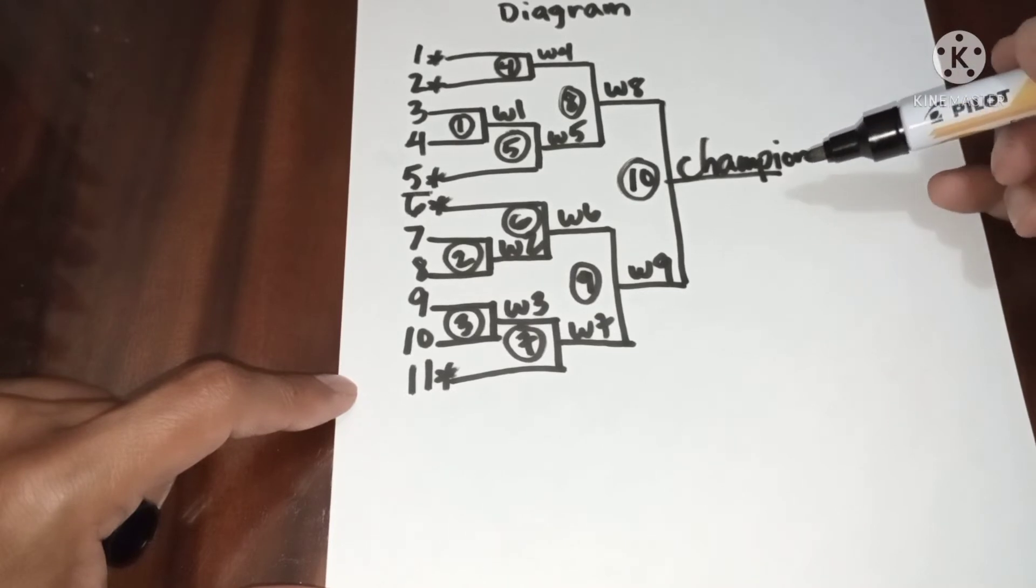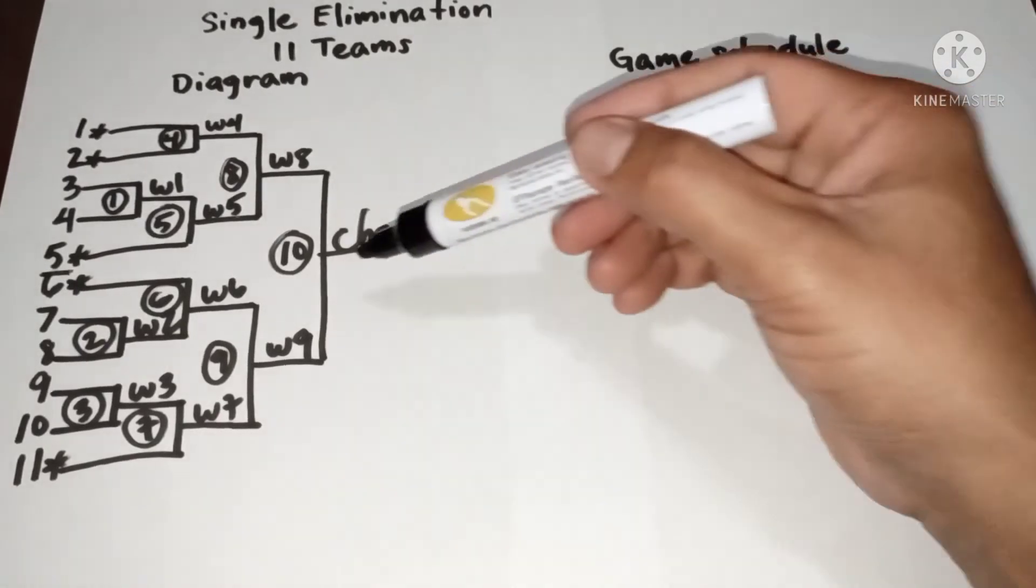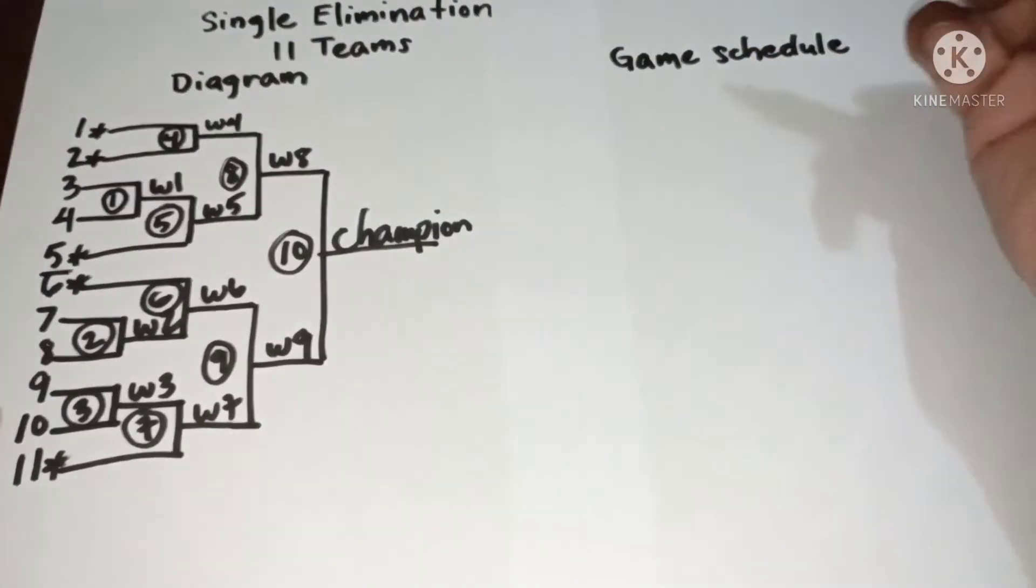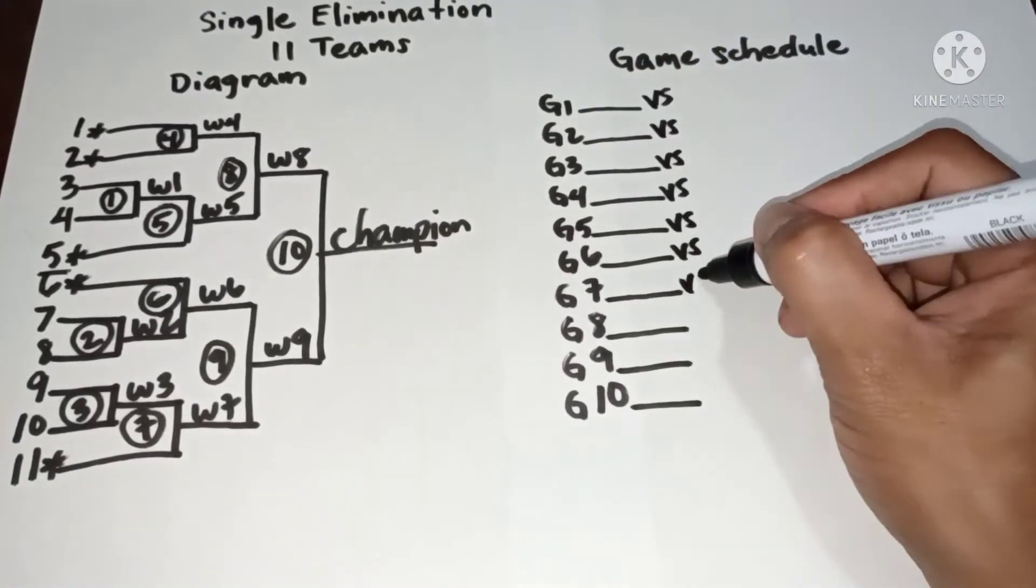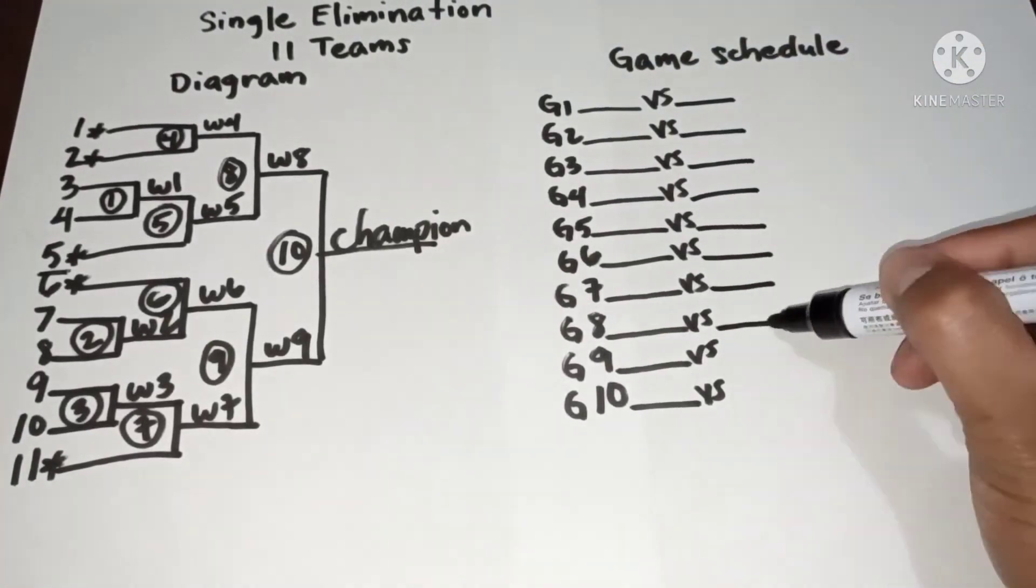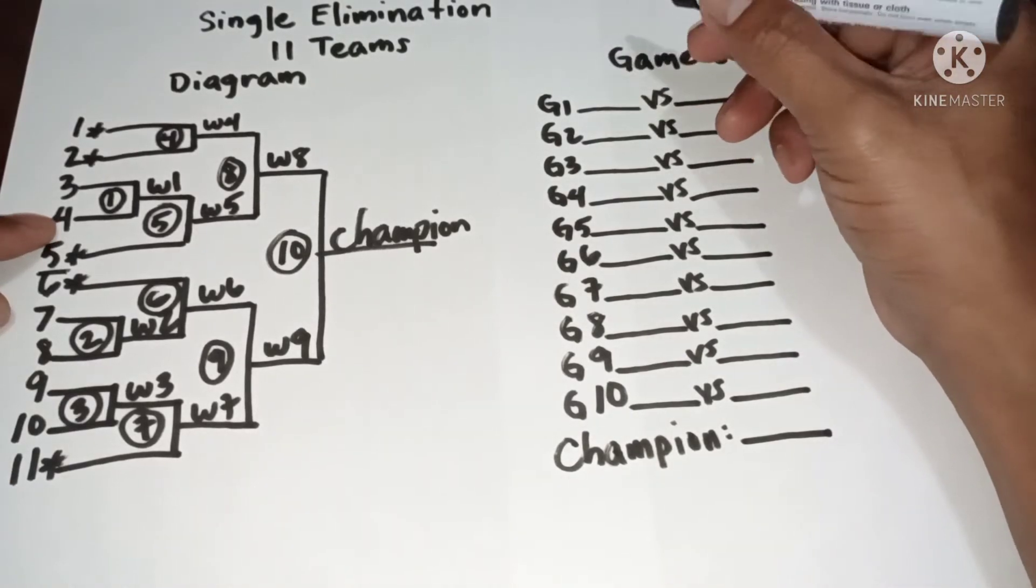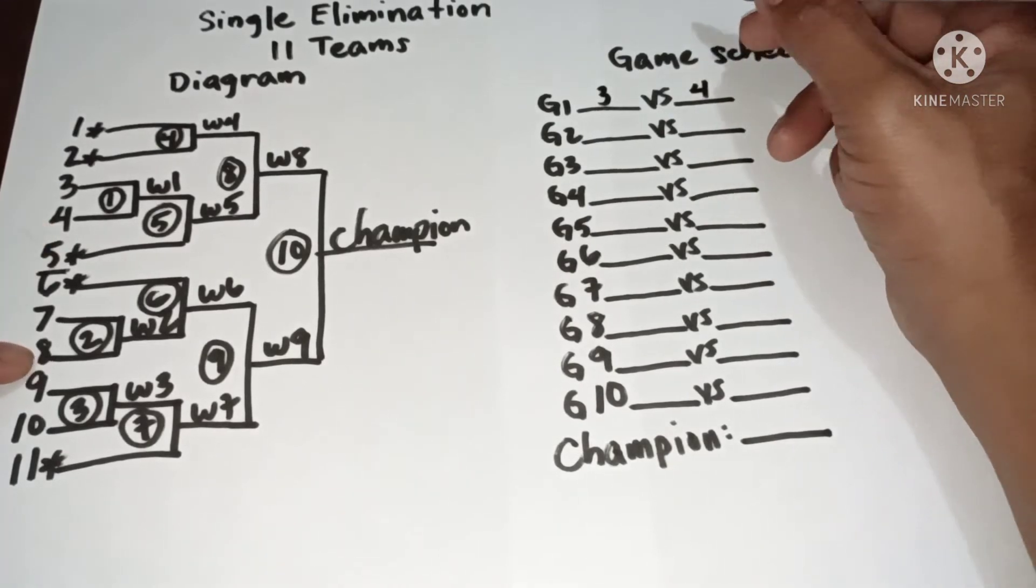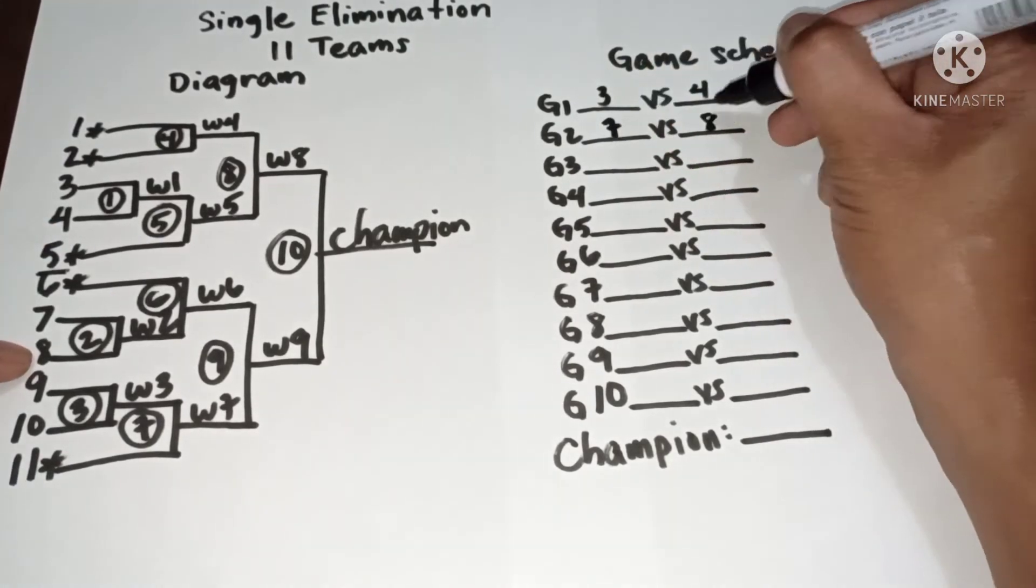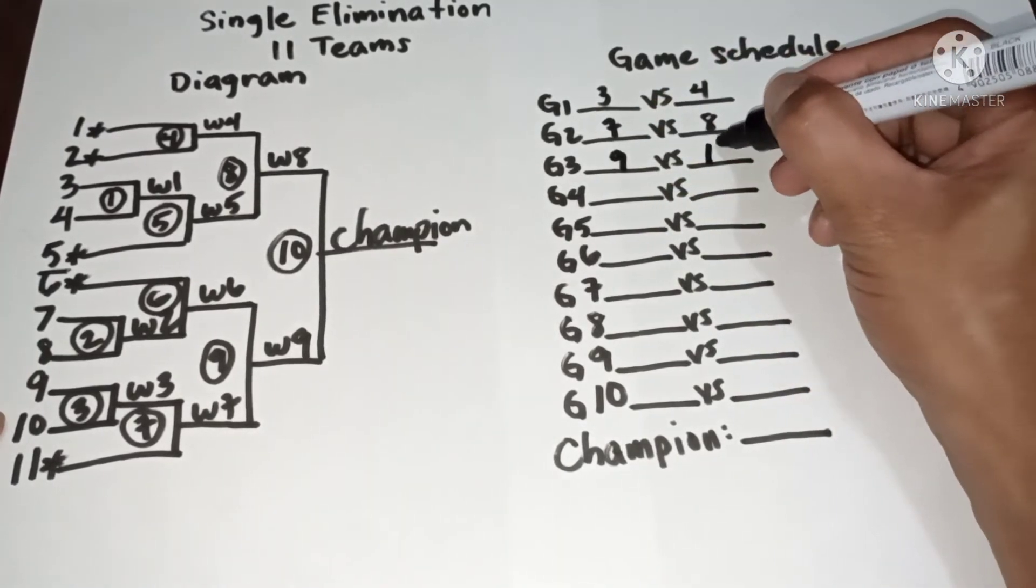Now let us proceed to game schedule. Since we have 10 games. Now let us interpret the diagram. In game 1, we have 3 versus 4. In game 2, we have 7 versus 8. In game 3, we have 9 versus 10.